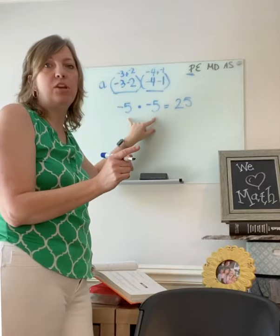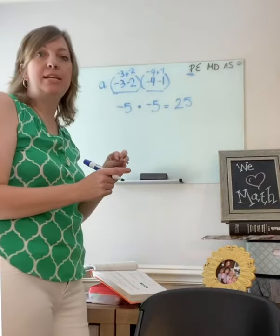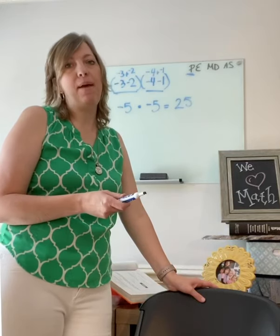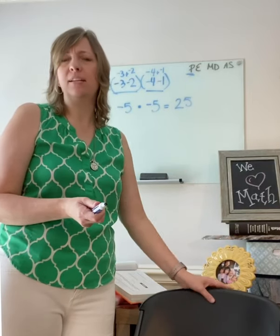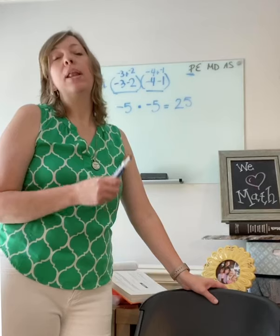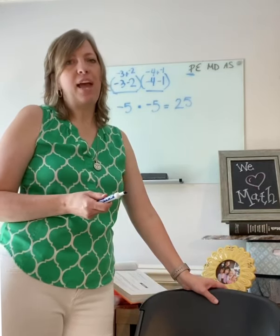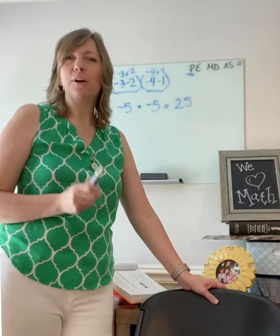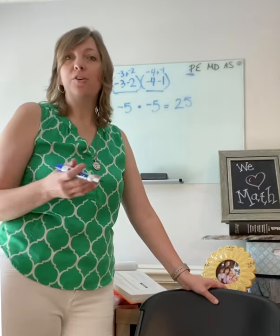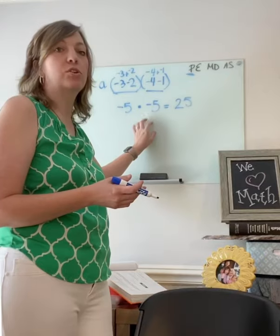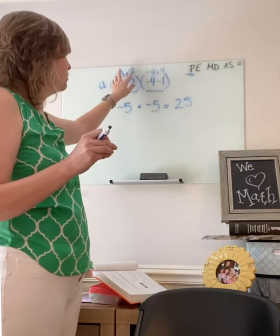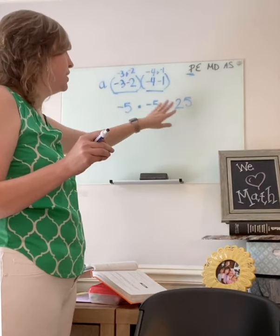When adding two negatives, you're going deeper in debt — those negatives don't cancel out. But when you multiply, two negatives do cancel out. It's important to keep those rules separate. When I'm adding negatives, I'm going deeper in debt. When I multiply two negatives, my answer is positive. Think of it like bedtime rules changing as you mature — multiplication and division have different rules than addition and subtraction. That's why it's important to remember those rules.